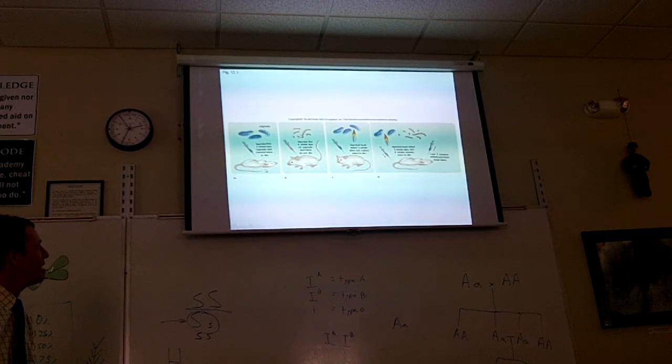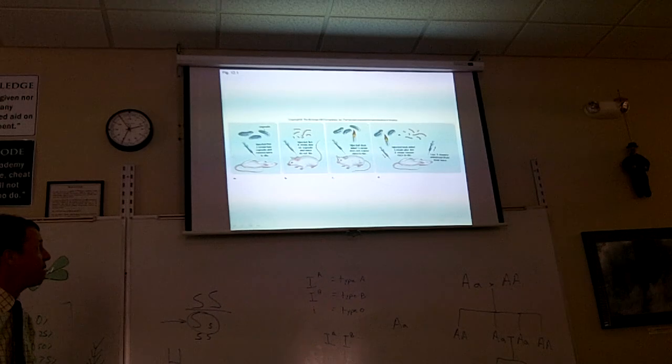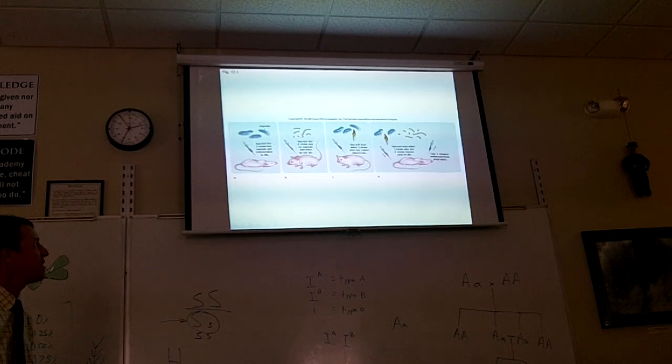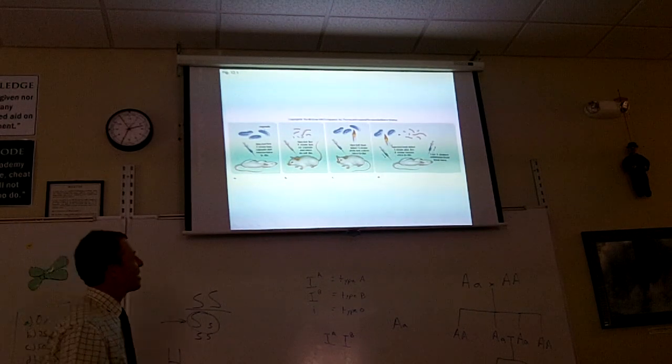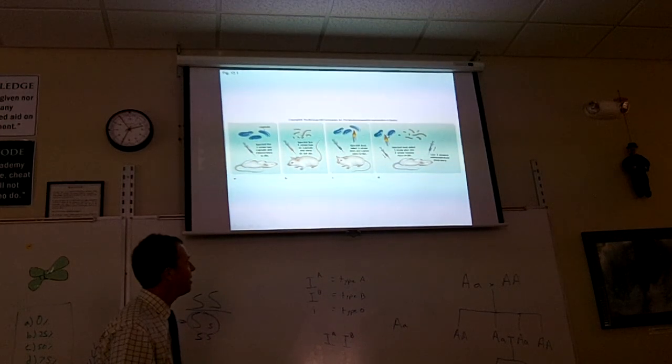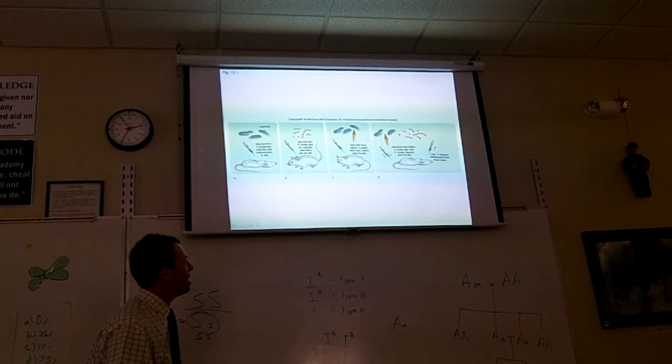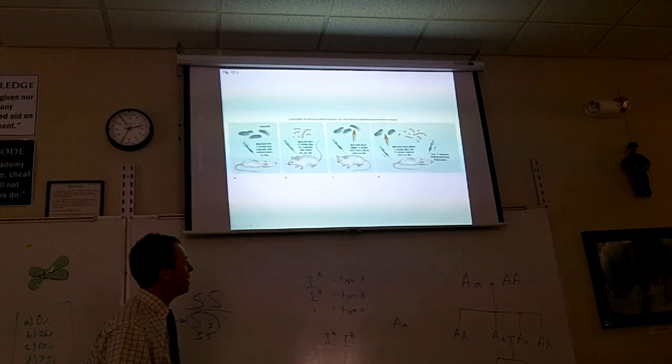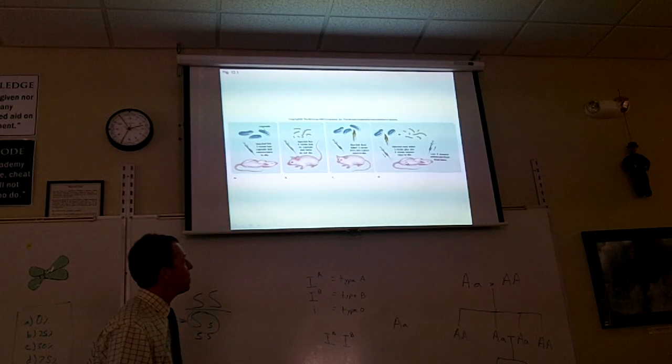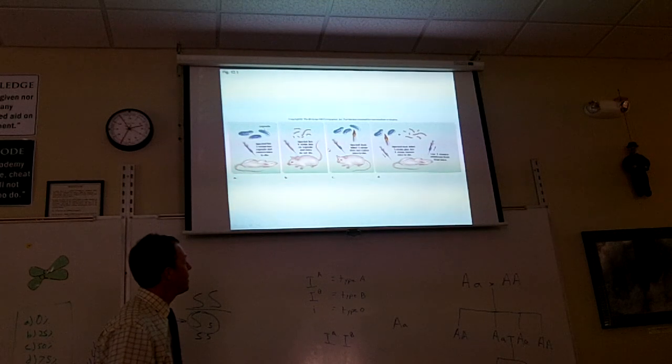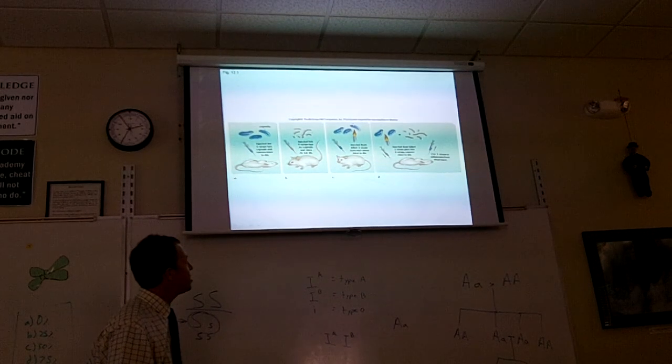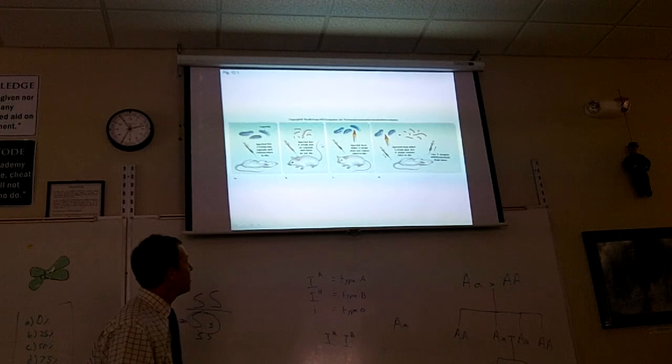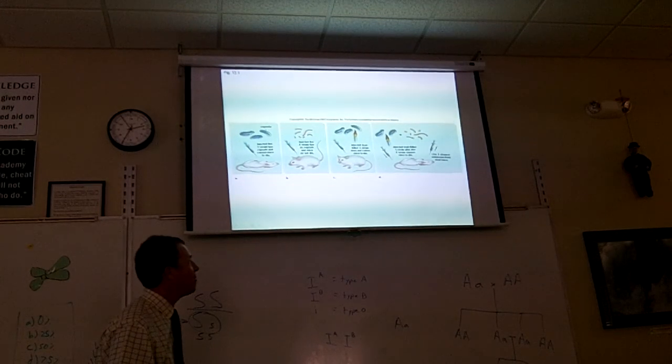So dead S-strain in the mouse, I mean alive S-strain in the mouse, the mouse dies. Dead S-strain in the mouse, the mouse lives. R-strain in the mouse, the mouse lives. Then he did this. He took heat-killed S-strain and combined it in a syringe with R-strain, injected the mouse and the mouse died.